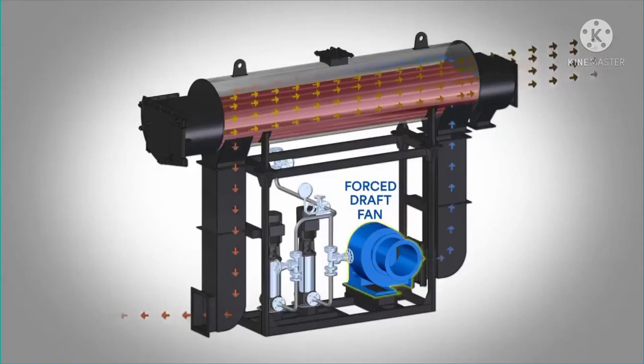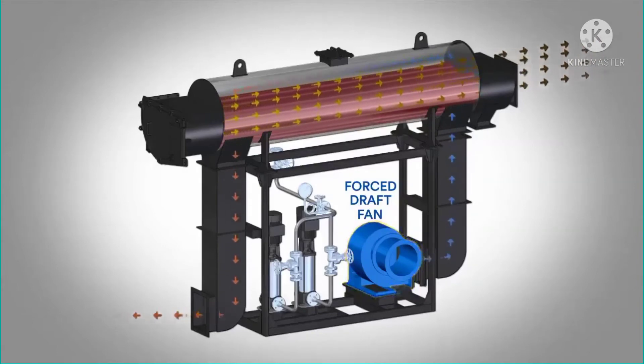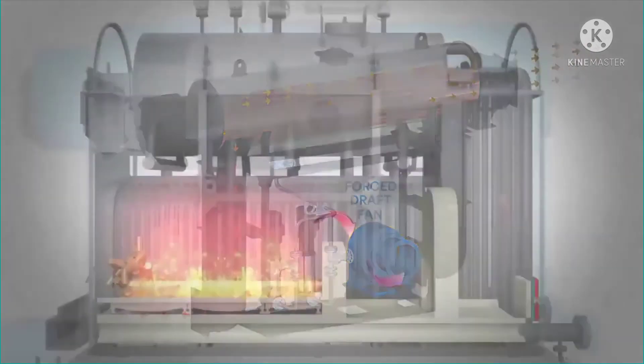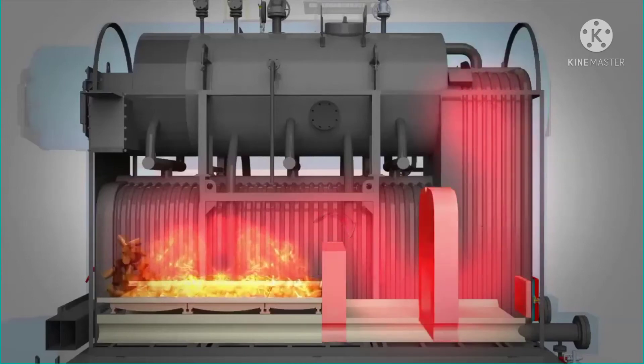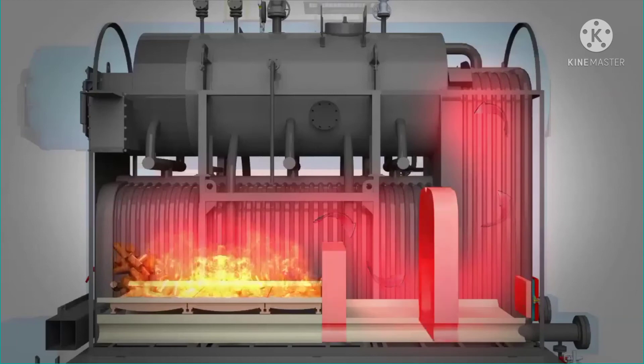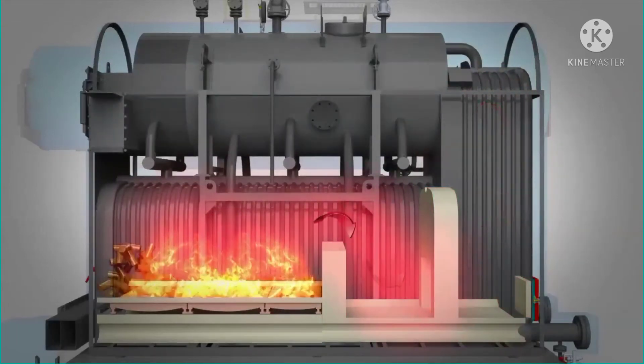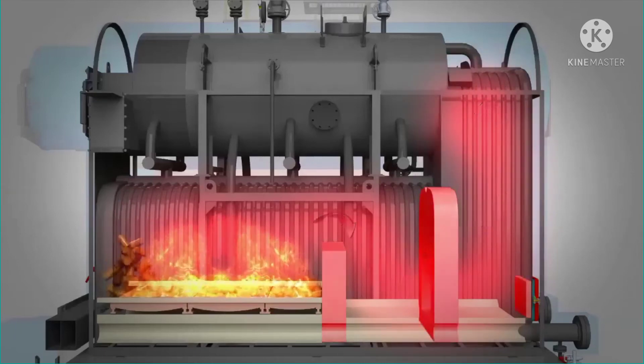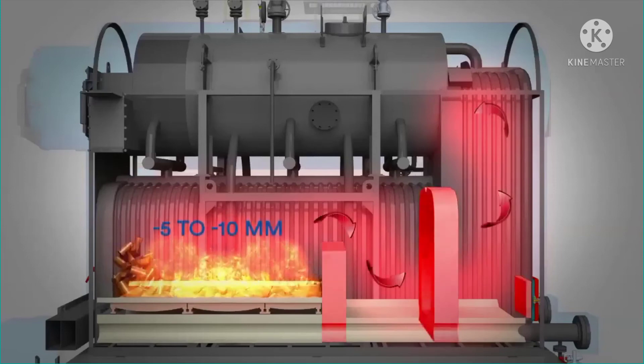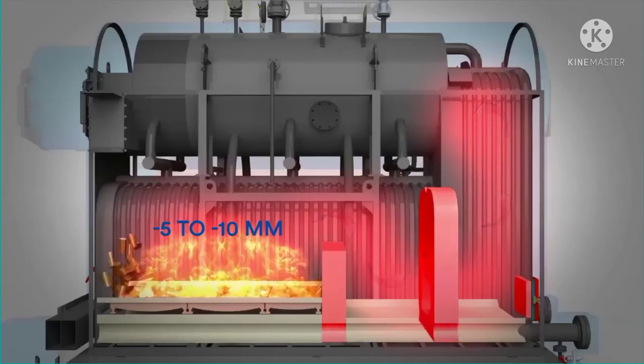When APH is used, combustion air is passed through APH and is heated up before entering the combustion chamber. The flue gases generated due to combustion of the fuel on the combustor are then taken through the membrane panel, reversal chamber, smoke tubes of the drum, HRU, and pollution control equipment by using an induced draft (ID) fan. The furnace and combustion chamber are kept at a pressure lower than atmospheric pressure, normally minus 5 to minus 10 mm of water column, by adjusting the suction of the ID fan.